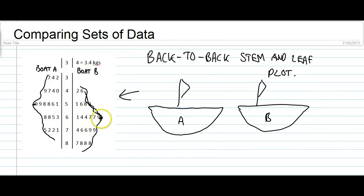So the fish caught by boat B were better than the fish caught by boat A, according to this stem and leaf plot. We can tell that just by looking at the two data sets side-by-side.